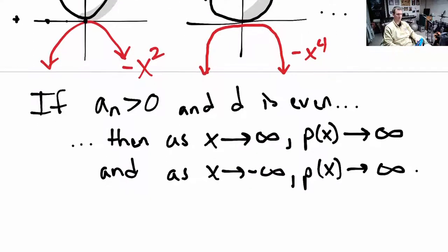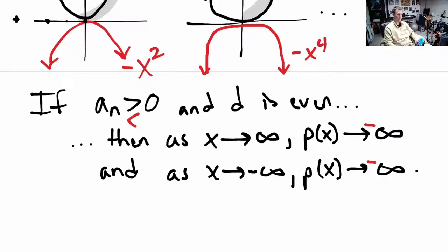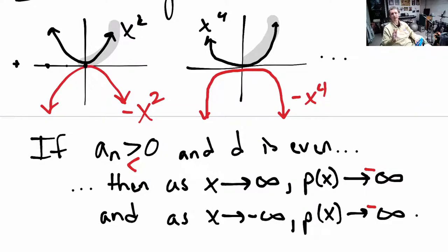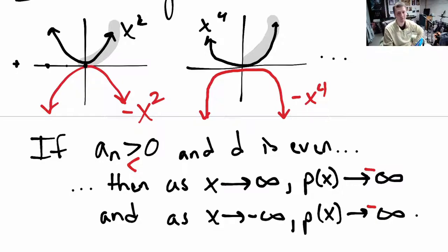If a is less than zero — a negative leading coefficient with an even degree — both ends go to negative infinity. What's kind of remarkable is that it doesn't matter what polynomial we have, so long as the leading coefficient is positive and the degree is even, this end behavior is universal among those polynomials. I could write down any polynomial, and the only thing that matters for end behavior is the sign of the leading coefficient and the parity of the degree — even or odd.